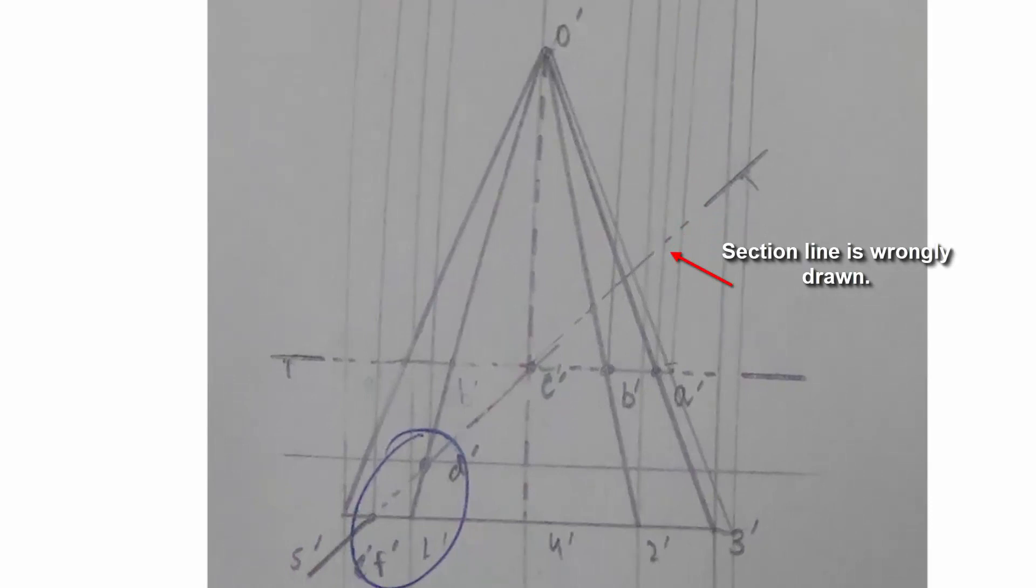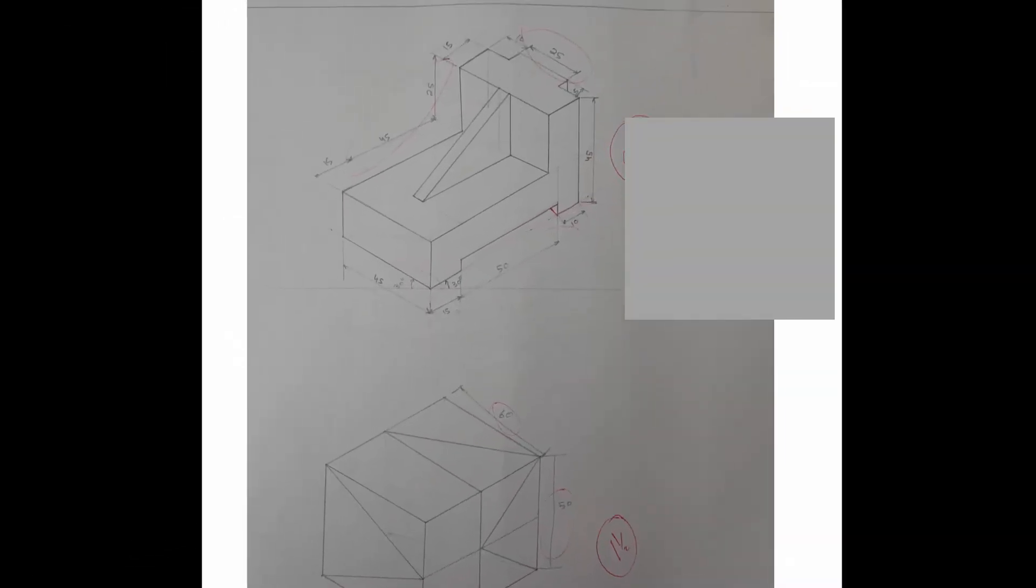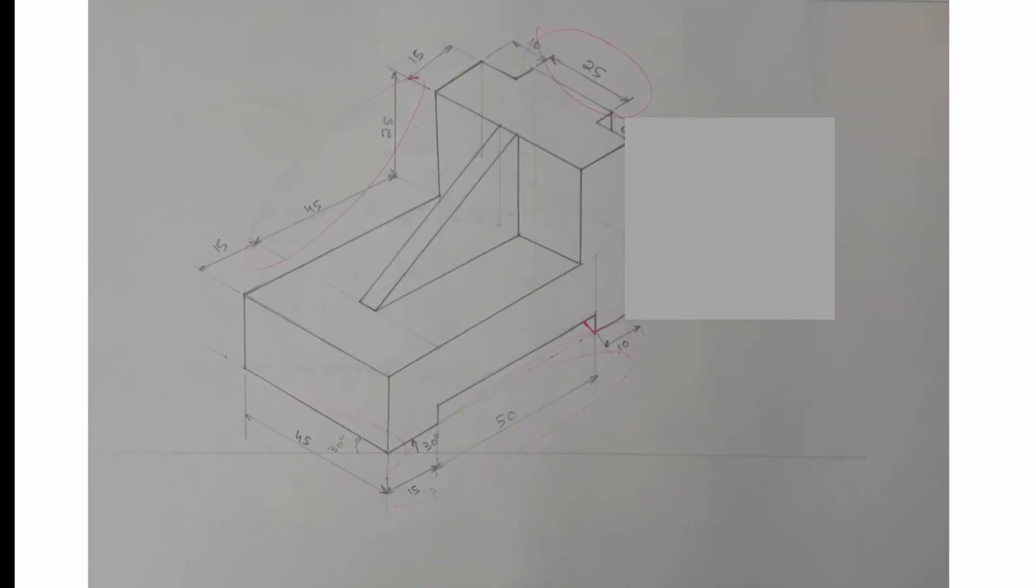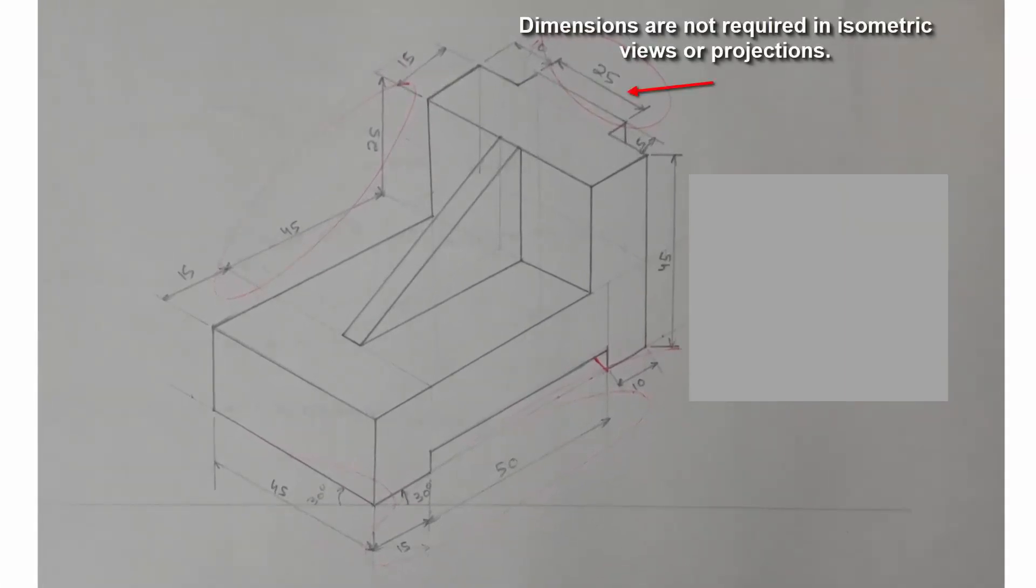Section line is wrongly drawn. It should be a short line, dot and a short line and so on. Dimensions are not required in isometric views or projections. So there should be no dimensioning in the isometric views.